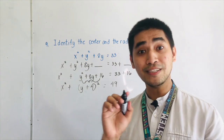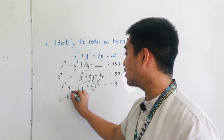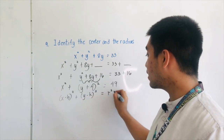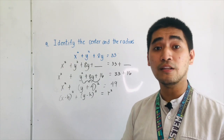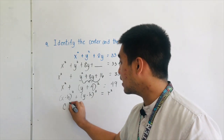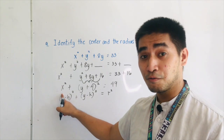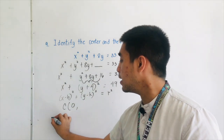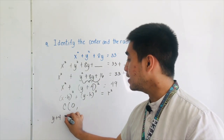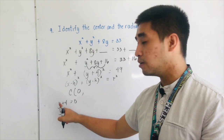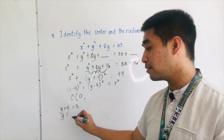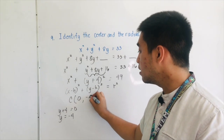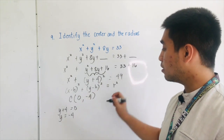Since the equation of the circle is x minus h, quantity squared, plus y minus k, quantity squared, is equal to r squared, we are asked to identify the center and the radius. Do we have another term involving x? We don't. Therefore, that is 0. We have y plus 4 is equal to 0, therefore the y coordinate equals — transpose positive 4 to the other side — that becomes negative 4. The center is equal to 0 and negative 4.